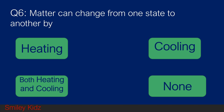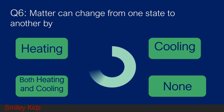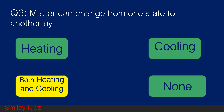Question number 6. Matter can change from one state to another by: option A heating, option B cooling, option C both heating and cooling, and option D none. Your time starts now. And your time is up. The right answer is both heating and cooling. Matter can change from one state to another by both heating and cooling.